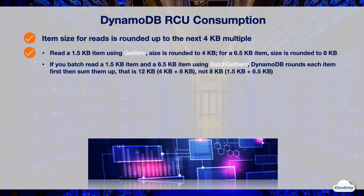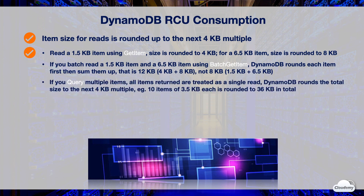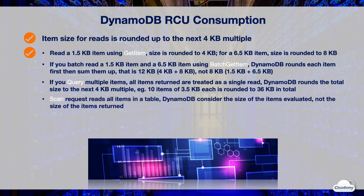For example, batch reading a 1.5 KB item and a 6.5 KB item gives a total size of 12 KB (sum of rounded values: 4 + 8), not 8 KB. When you query multiple items, all items returned are treated as a single read — DynamoDB rounds up the total size to the next 4 KB multiple. For example, querying 10 items of 3.5 KB each gives a total of 35 KB, which DynamoDB rounds up to 36 KB. For Scan requests, DynamoDB considers the size of all items evaluated, not just the items returned.